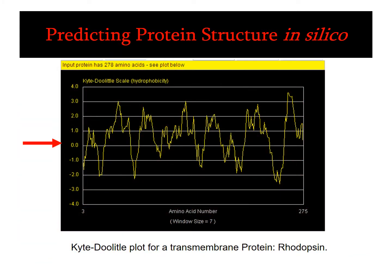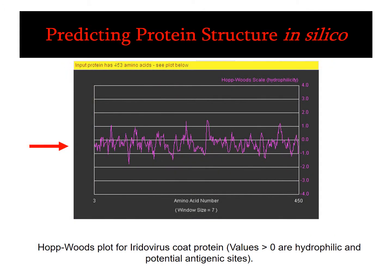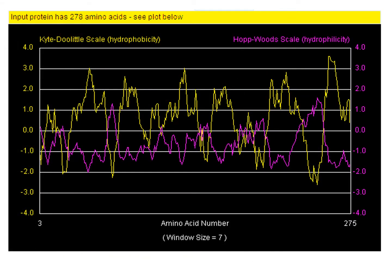This is the prediction of a protein structure in silico. This is another prediction for a growth hormone. As you can see, when we predict an iridovirus coat protein, which is basically an antigenic principle, there is a variation in the hydrophobic and hydrophilic domains. These are indications of potential antigenic sites which can be used for vaccine design. The Kyte-Doolittle scale and the Hopp-Woods scale predict the hydrophobicity and hydrophilicity of a protein respectively.